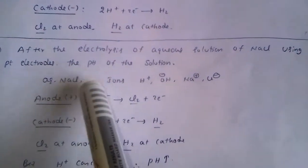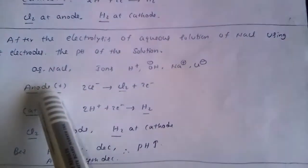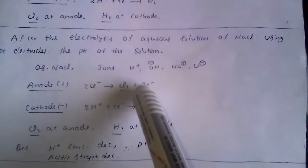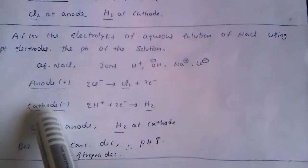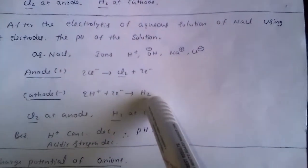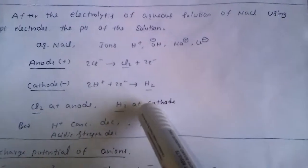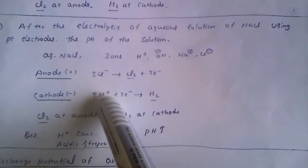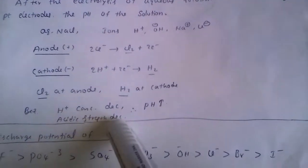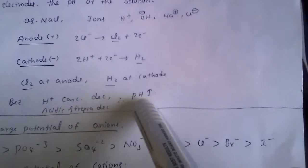After electrolysis of aqueous NaCl, the pH of the solution changes. At the anode: 2Cl⁻ gives Cl₂ + 2e⁻. At the cathode: 2H⁺ + 2e⁻ gives H₂. During electrolysis, H⁺ concentration decreases, which means acidic strength decreases. As acidic strength decreases, pH value increases. So the pH of the solution increases.